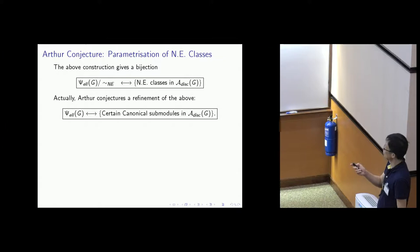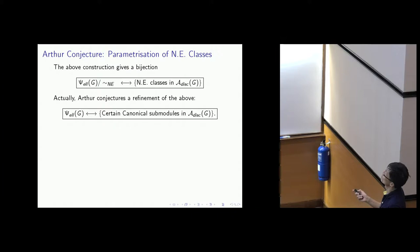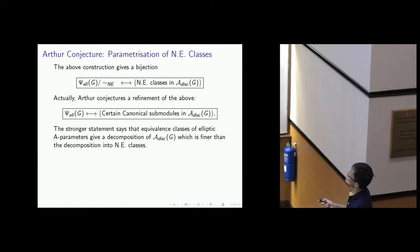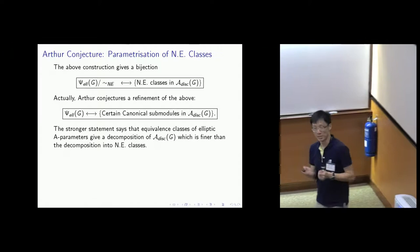Arthur's conjecture is more refined than this, because he doesn't really work with near equivalence classes of elliptic parameters. He works with isomorphism classes of elliptic parameters, and each one should give a certain canonical submodule in the discrete spectrum. This is a stronger statement, because it says that equivalence classes of elliptic A-parameters induce a decomposition of the automorphic discrete spectrum which is finer than the decomposition into near equivalence classes.